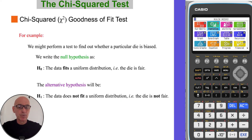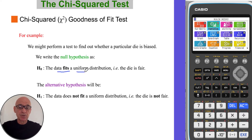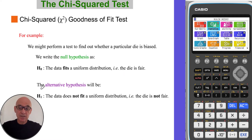For example, we might perform a test to find out whether a particular die is biased. In which case we'd write: the null hypothesis is that the data collected fits a uniform distribution — in other words the die is fair. The alternative hypothesis would be that the data does not fit the uniform distribution — in other words the die is not fair.